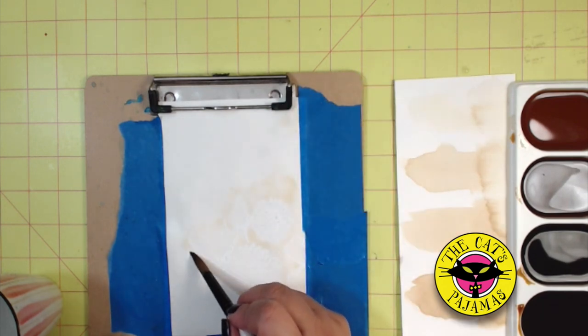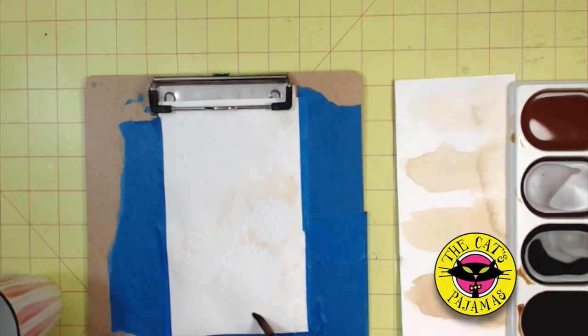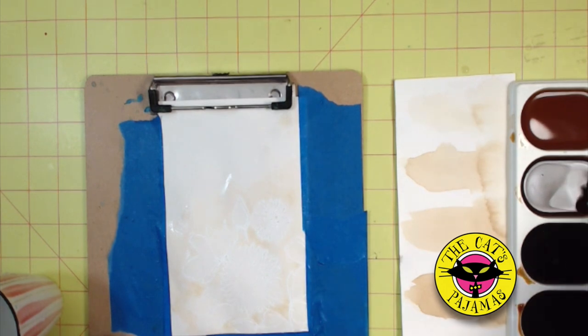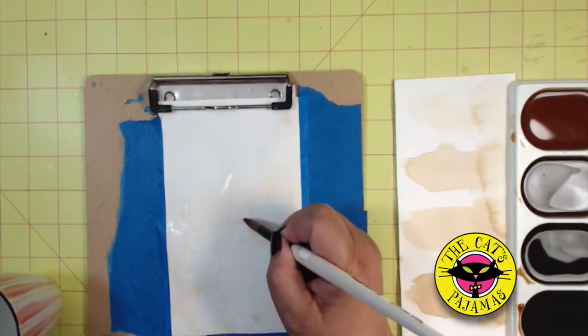So we start with the lightest color. And I'm just doing the background right now. And you can kind of see that the flowers are starting to pop because the embossing powder keeps the coffee away from where I stamped.